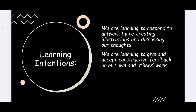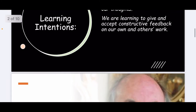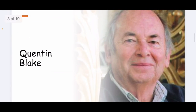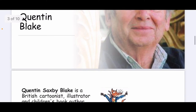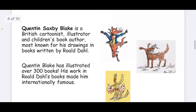We are also learning to give and accept feedback on our own and others' work. To do that, we need to think about the style of Quentin Blake's drawings and how we've managed to put them into our own illustrations. When we're giving feedback, we're thinking about how well we've done and how hard we've tried to make our drawings look as much like Quentin Blake's as possible. Here's a little picture of Quentin Blake, just in case you didn't know what he looked like.